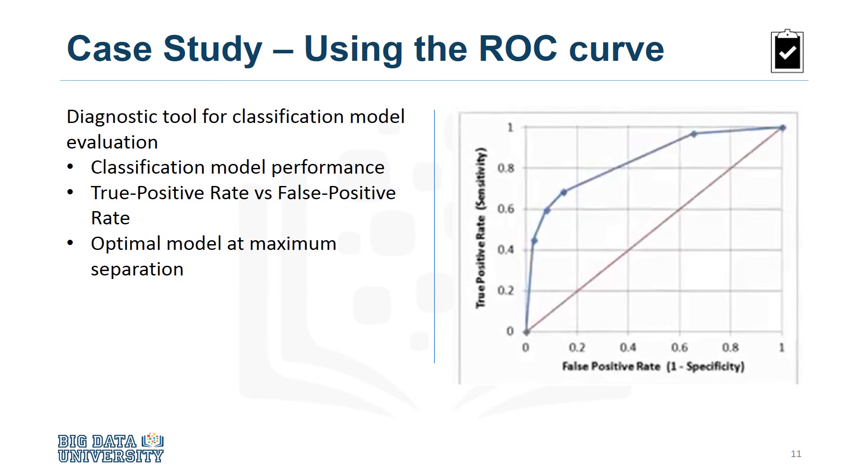As you can see on this slide, the optimal model is the one giving the maximum separation between the blue ROC curve relative to the red baseline. We can see that model 3, with a relative misclassification cost of 4 to 1, is the best of the four models.